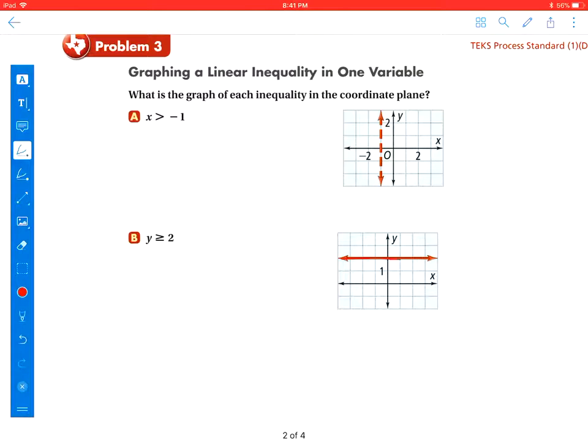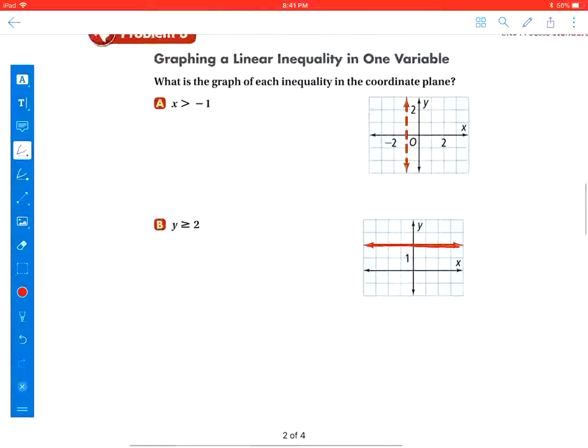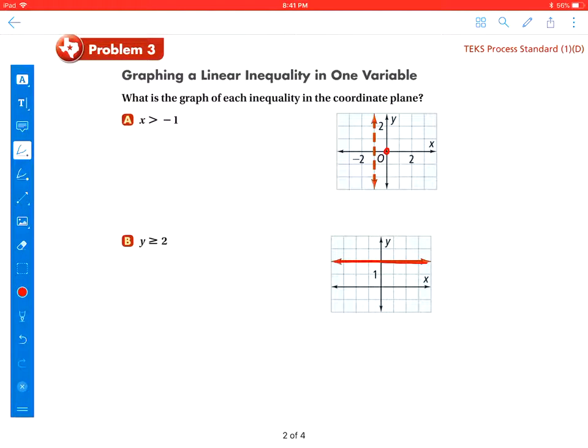Now letter B is greater than or equal to, so that's going to be a solid line. Now I'm going to, again, pick that coordinate point (0, 0). So I'm going to plug in (0, 0). Well, I don't have a y value here to plug in, but I do have an x value. So I'm going to say 0. My x value is 0 greater than negative 1. Is this true? Yes. So this means it's a solution.